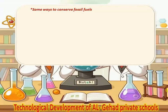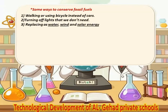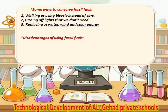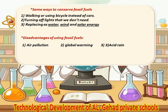Some ways to conserve fossil fuels. Number 1, walking or using a bicycle instead of cars. Number 2, turning off lights that we don't need. Number 3, replacing with water, wind and solar energy. Disadvantages of using fossil fuels: Number 1, air pollution. Number 2, global warming. Number 3, acid rain.